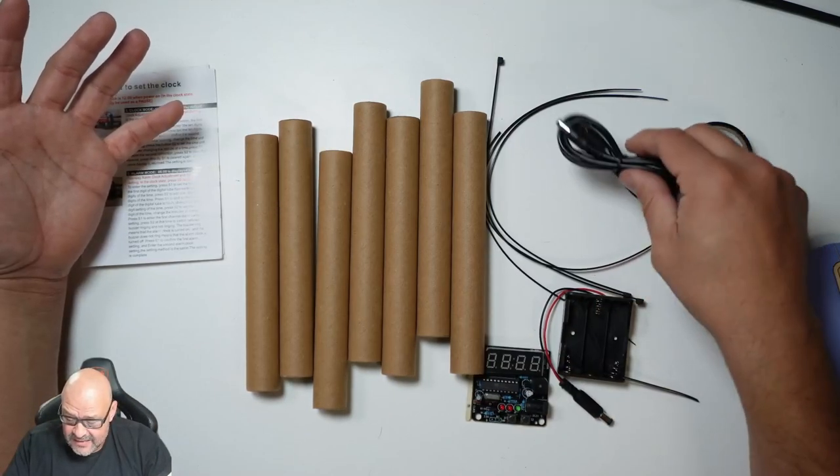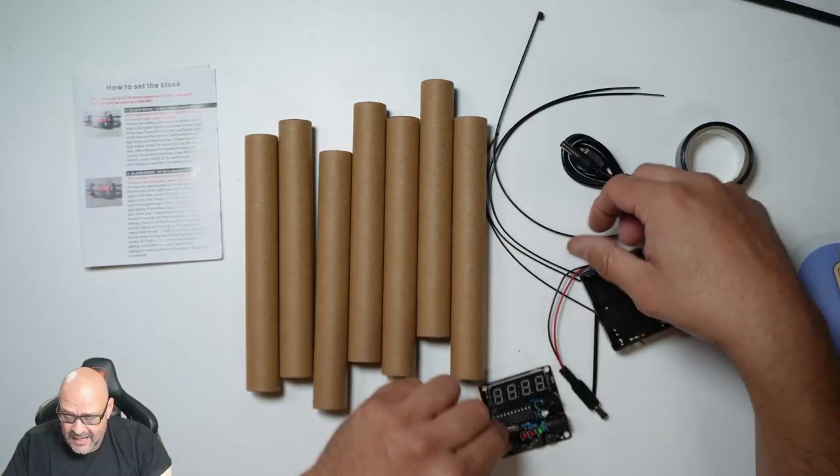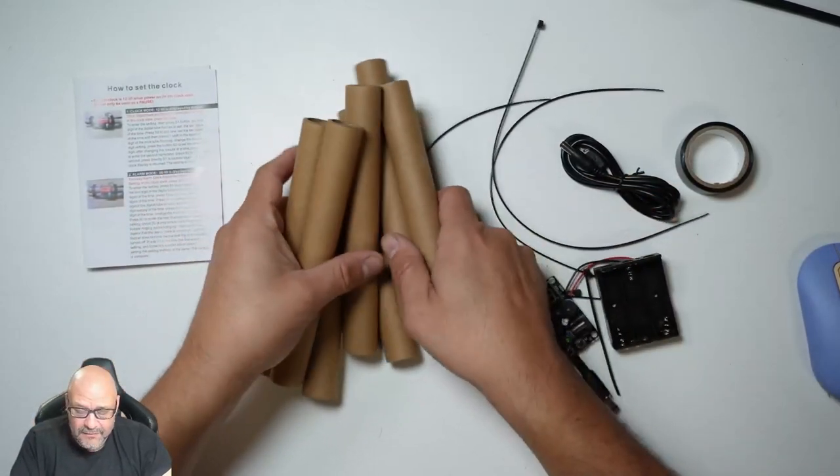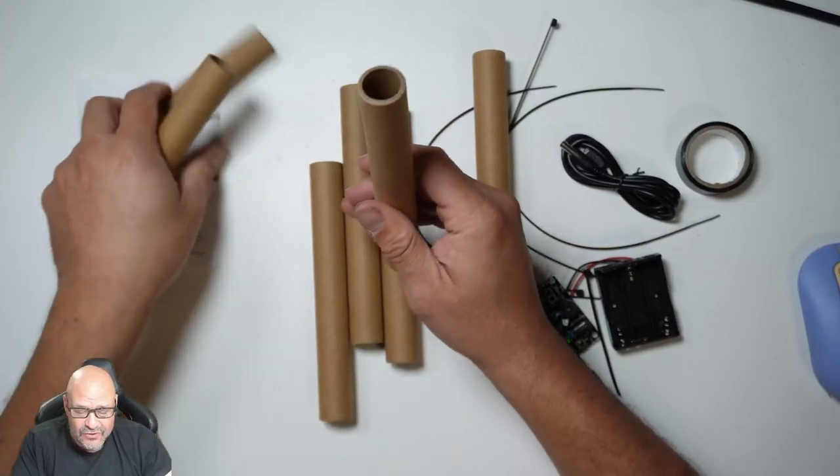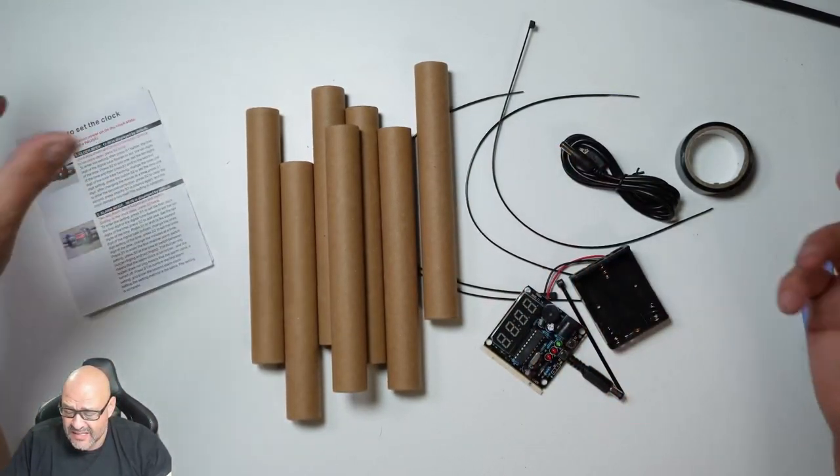We're going to put it together and see how the whole thing works. So basically, they give you a battery system and a timer and a couple of empty tubes, and we're going to put them together. So I'm going to put it together, get instructions, and see how it looks.